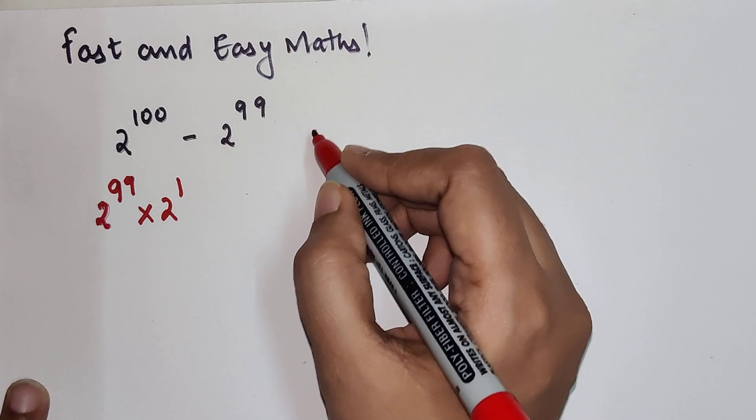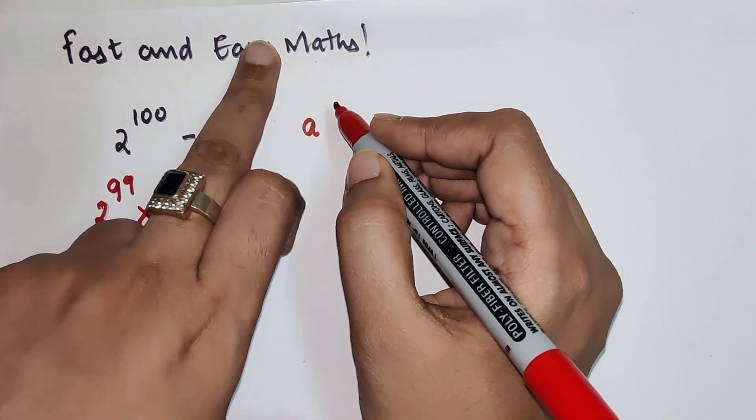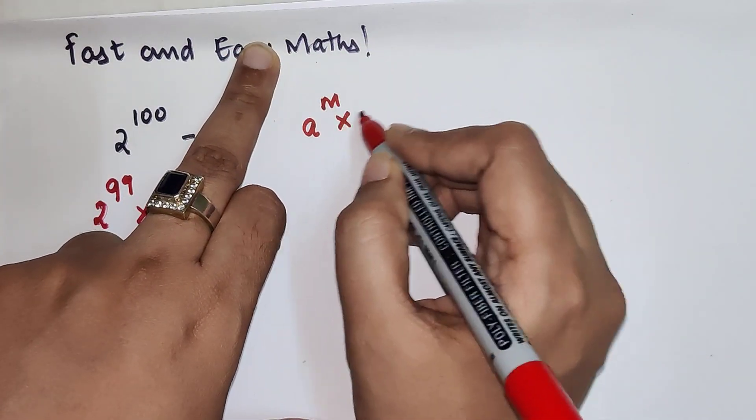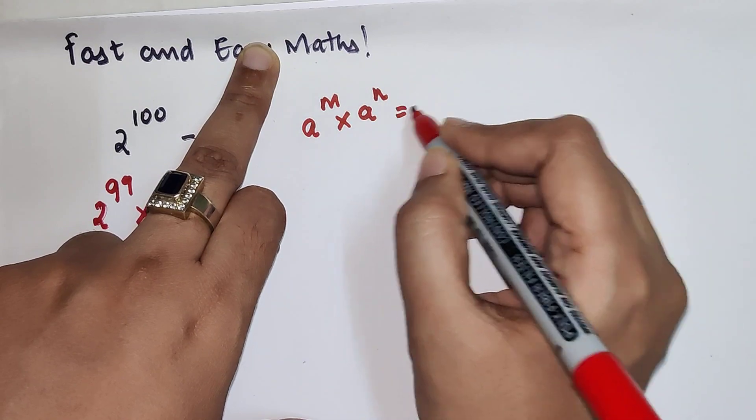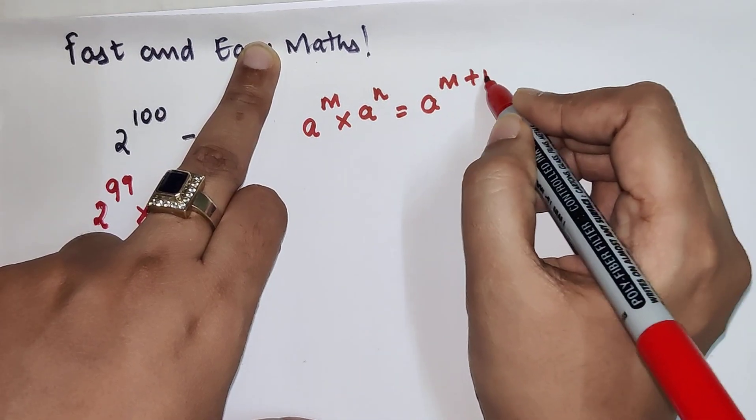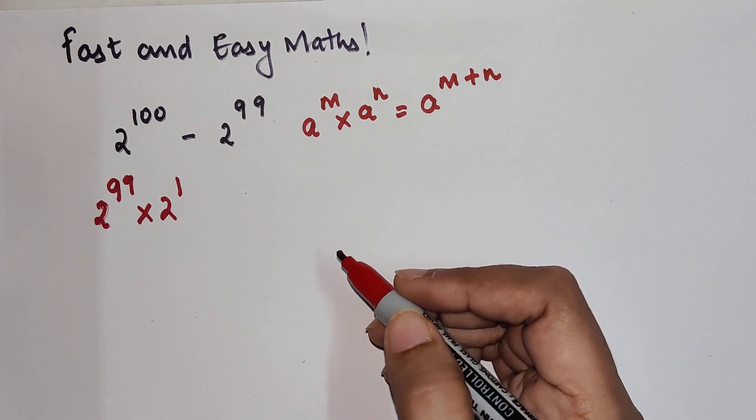Why? Because we know that a raised to m times a raised to n can be written as a raised to m plus n.